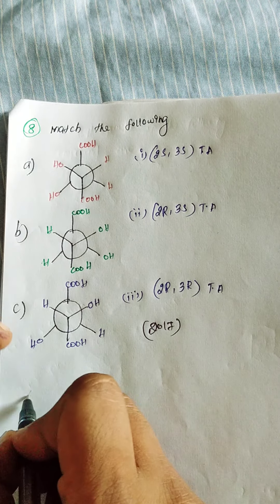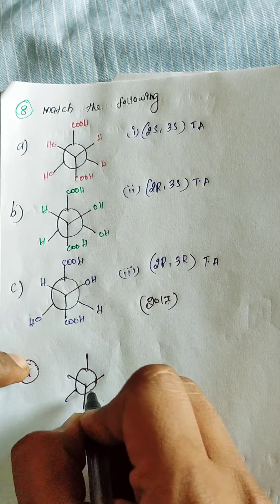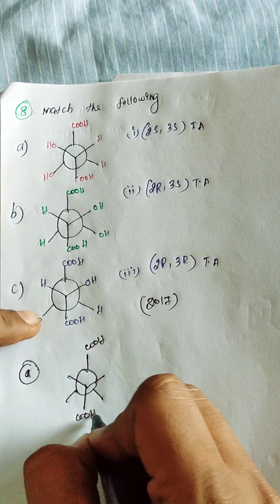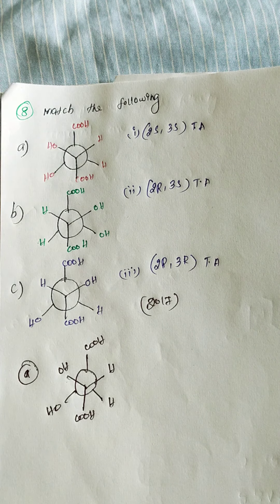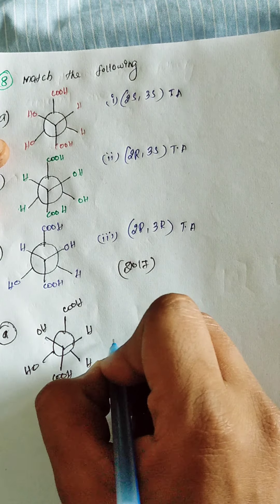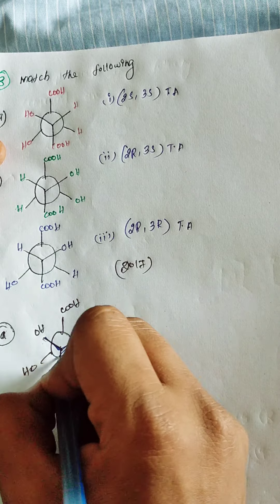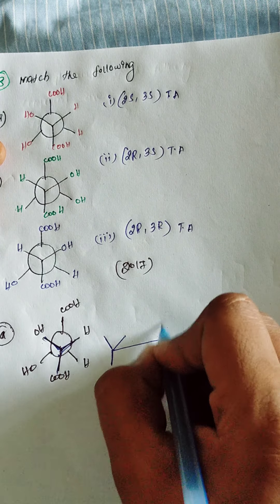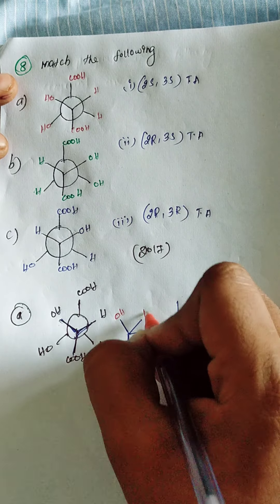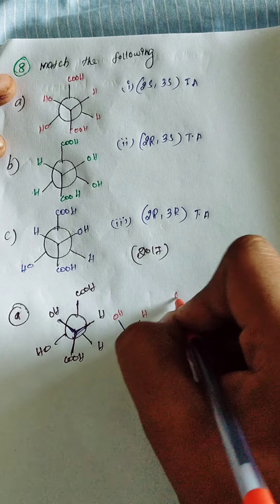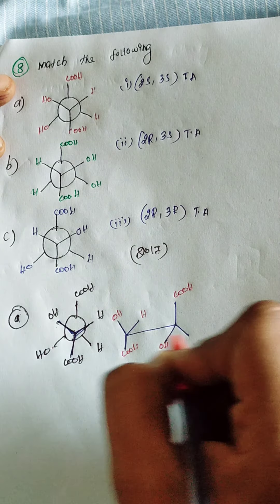Taking structure A in the staggered Newman projection: COOH is on the front carbon. Converting to Fischer projection — the front carbon has OH on the left side and H on the right side, with COOH on top. For the back carbon, it is inverted. After rotating 180 degrees to align properly: COOH on top, OH on the left, H on the right for the back carbon as well.